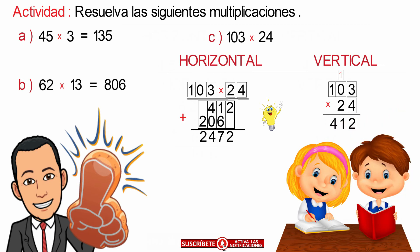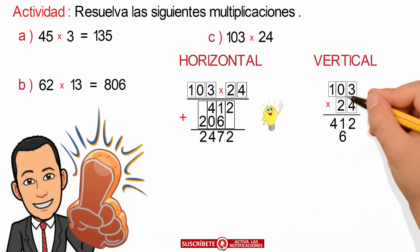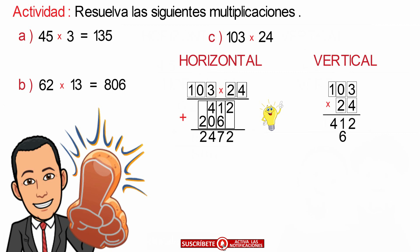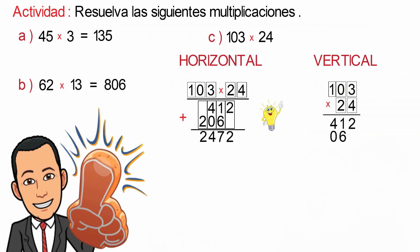In a similar way, we perform the procedure for the number 2: multiply by 3, corresponding to the unit, giving us 6, placing it below the 1 and leaving the space below the 2 blank. We repeat the procedure: multiply 2 by 0, giving us 0, placed below the 4. Finally, multiply 2 by 1, corresponding to the hundreds, giving us 2, and we proceed with summing.